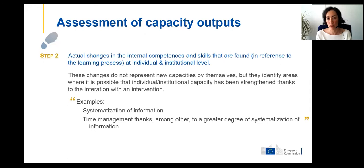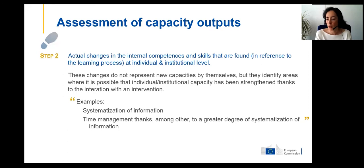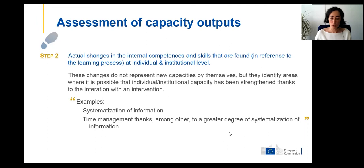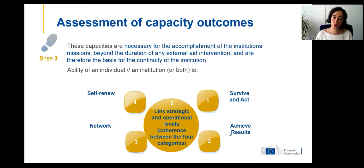Other induced outputs include the reduction of organizational overlapping or the adoption of a more decentralized structure. In the RAC, we gather all capacity outputs promoted or facilitated by the interaction with the intervention. The most important ones for the RAC are those qualified as induced outputs. Step three is on the assessment of capacity outcomes — the capacities necessary for accomplishment of the institution's mission beyond the duration of any given external support.